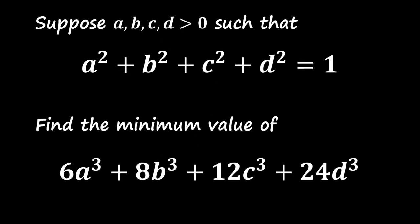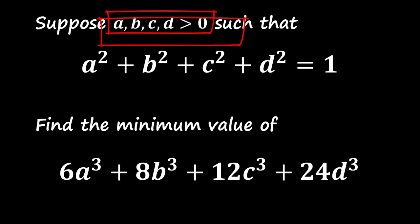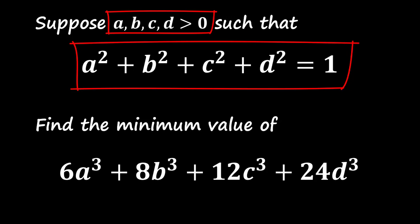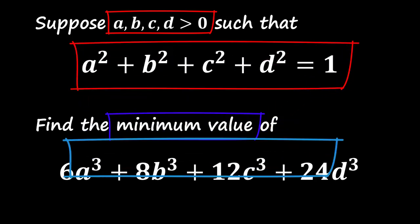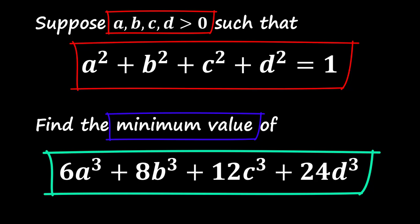In this problem, we are given that a, b, c, d are positive numbers such that the sum of their squares equals 1. Our goal is to find the minimum value of the expression 6a cubed plus 8b cubed plus 12c cubed plus 24d cubed.